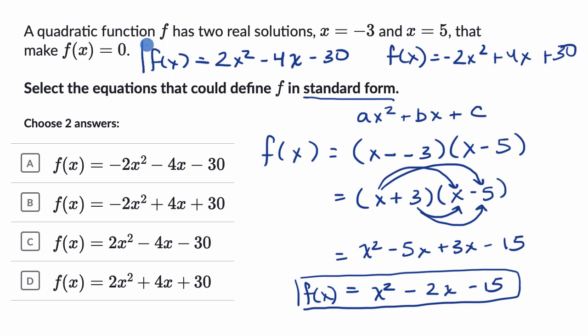So I'm gonna say it one more time. The three things that I'm boxing off here, these three possible functions, these are all different functions. If I were to graph it, they would all look different, but they all have the same two real solutions, x equals negative three and x equals five.